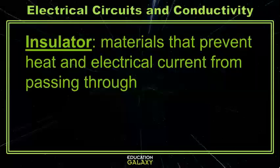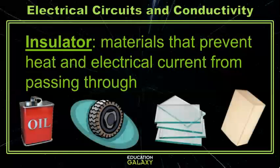Objects that prevent heat and electrical currents from moving through them are called insulators. These include rubber, oil, glass, and dry wood.